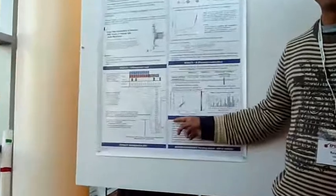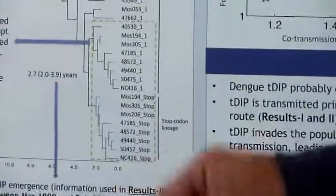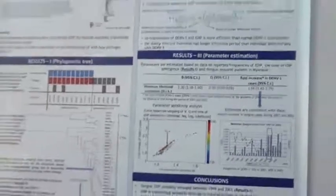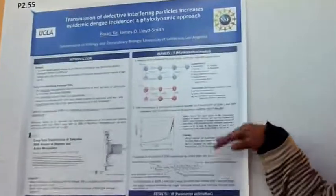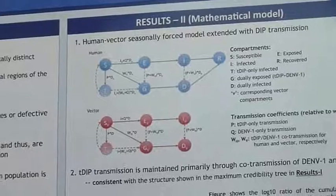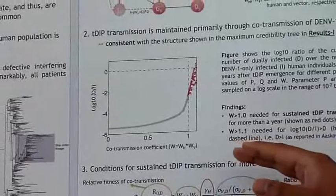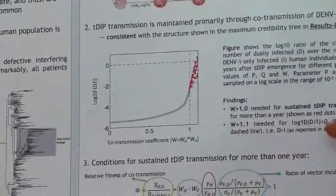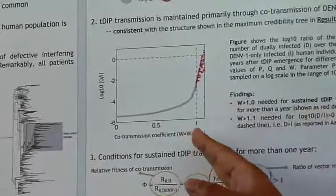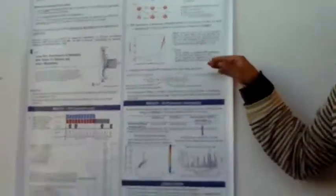We constructed this compartmental model using a previously developed human and Dengue model. We estimated the contribution of co-transmission. We found that in order for defective interfering particle to transmit systemically for more than one year, the co-transmission coefficient has to be greater than one, which means greater than the wild-type Dengue transmission.